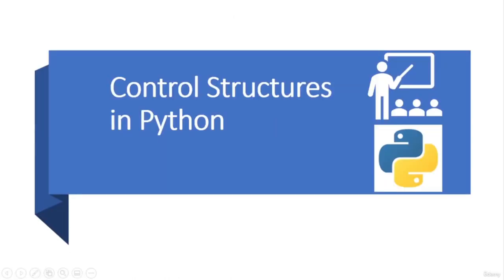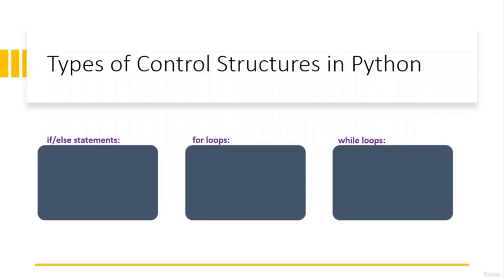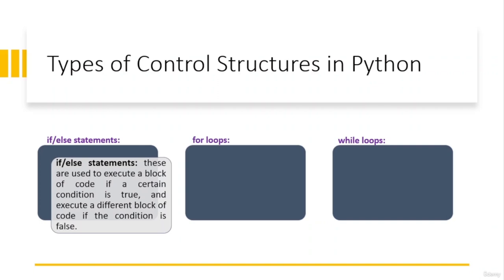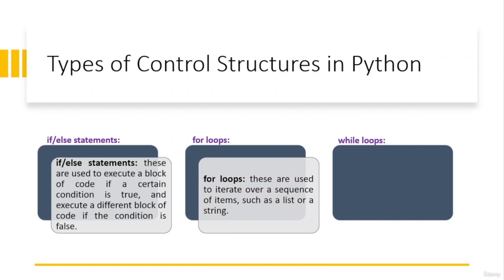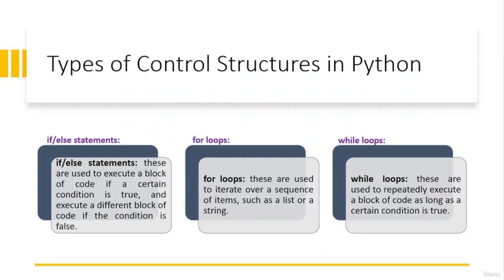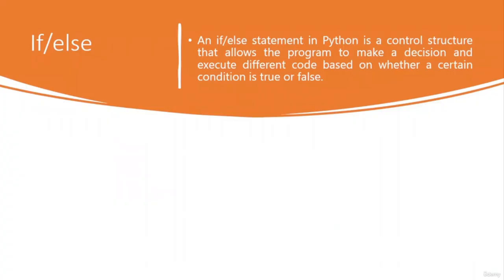A control structure in Python is a block of code that determines how the program flows — it controls execution based on certain conditions. There are several types of control structures: if-else statements, for loops, and while loops. If-else statements execute a block of code if a condition is true and a different block if the condition is false. For loops iterate over a sequence of items such as a list or string. While loops repeatedly execute a block of code as long as a condition is true.